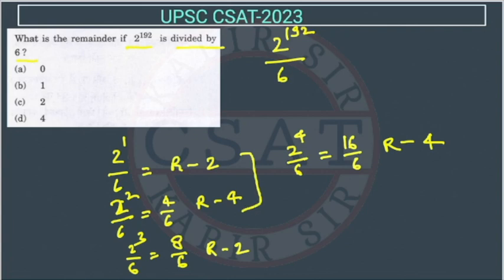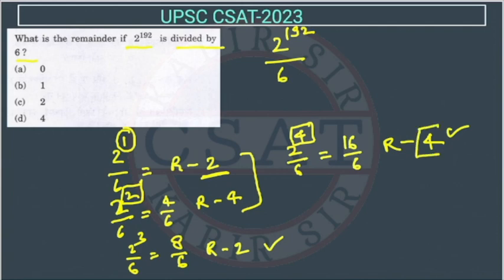The pattern is 2, 4 and again 2, 4. So what is happening: if the power is odd, then we are getting remainder as 2. If the power is even, we are getting remainder as 4.